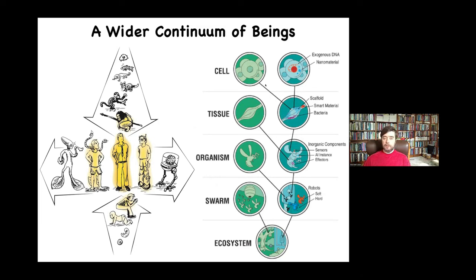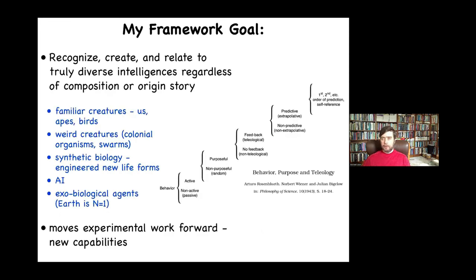Some of them are evolved, some of them are engineered. And so there's this gradual, slow set of changes where one might ask: where do these various properties begin and end, and how do they change? My framework is really focused on the goal of being able to simultaneously consider very unconventional agents.